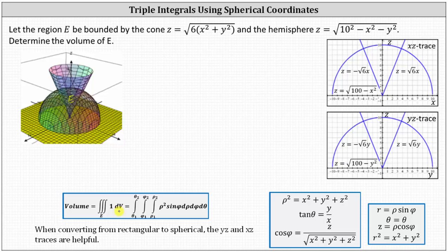I've already provided the x,z trace and y,z trace here on the right. To determine the x,z trace, we set y equal to zero in both equations. For the first equation, when y is zero, we have z equals the square root of six x squared, which simplifies to z equals plus or minus square root six times x. This gives us the V-shape in the x,z trace. The right segment is given by z equals square root six times x with slope positive square root six, and the left part by z equals negative square root six times x. For the second equation, when y is zero, we have z equals the square root of the quantity 100 minus x squared, which gives us the hemisphere with a radius of 10.